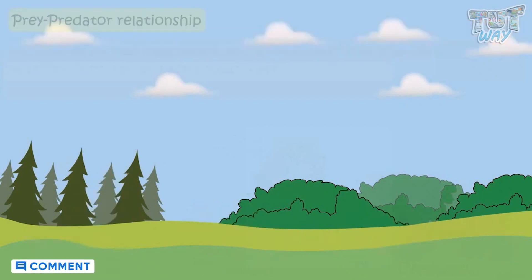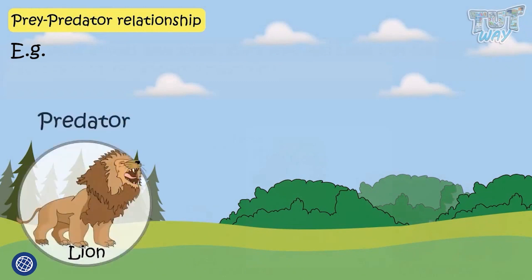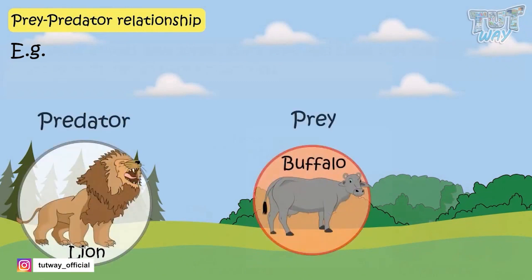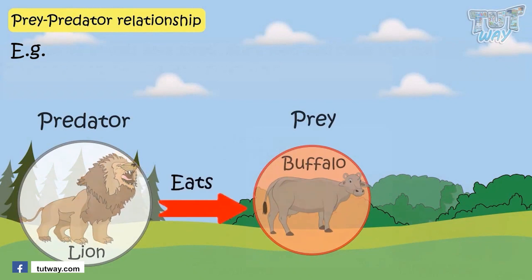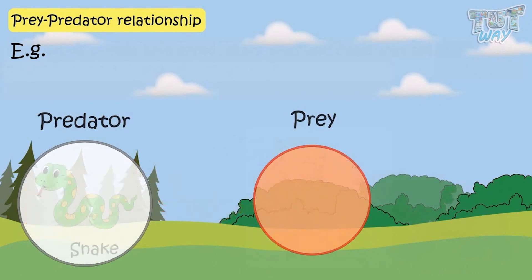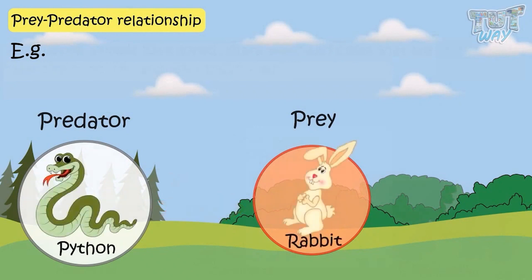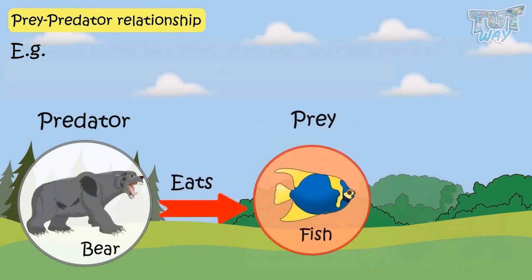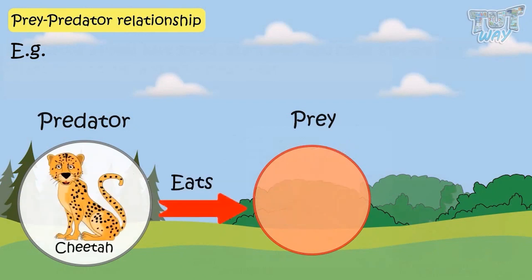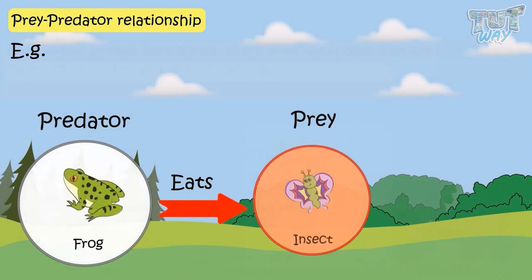Now let's see some predator-prey relationships. Some examples are: lions and buffaloes, as lions eat buffaloes; tiger and deer, as tigers eat deer; snake and frog, as snakes eat frogs; python and rabbit; bear and fish; cheetah and gazelle; wolves and rabbits; and frogs and insects.